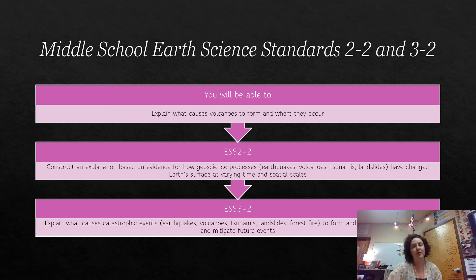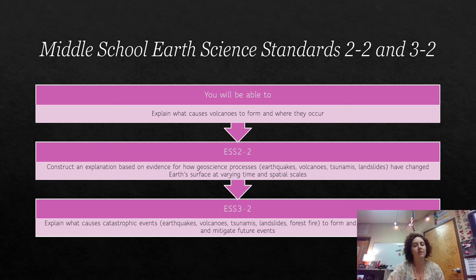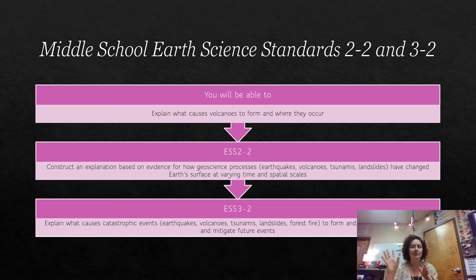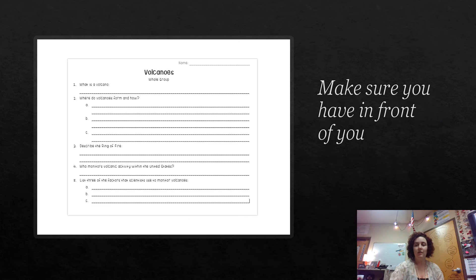We are working with Middle School Earth Science Standard 2-2 and 3-2, which states that you'll be able to construct an explanation based on evidence for how geoscience processes have changed Earth's surface over varying times and spatial scales. You'll also be able to explain what causes catastrophic events to form and occur, and use data to predict and mitigate future events — like how we can tell a volcano is due for an eruption soon versus hundreds of years away. Make sure you have your volcano notes in front of you.